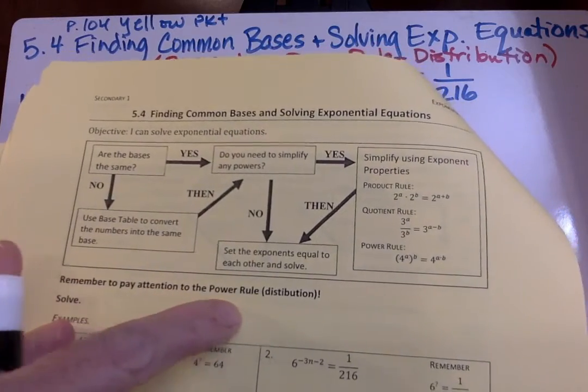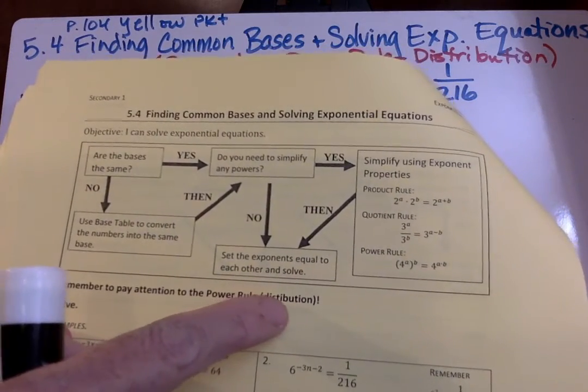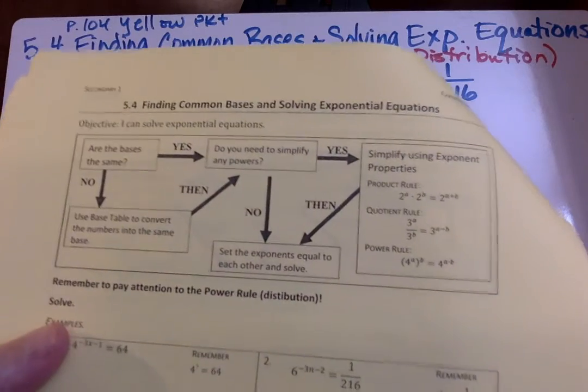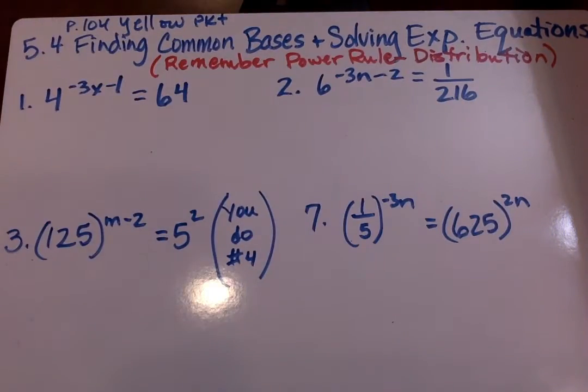Remember to pay attention to the power rule distribution, so make sure you add an R there because that's spelled incorrectly. Okay, we're going to go ahead and do number 1 here.